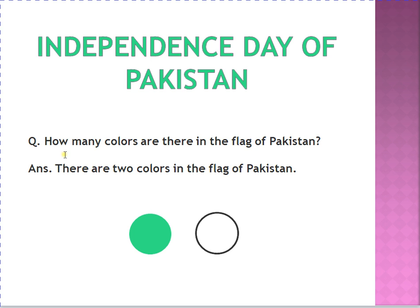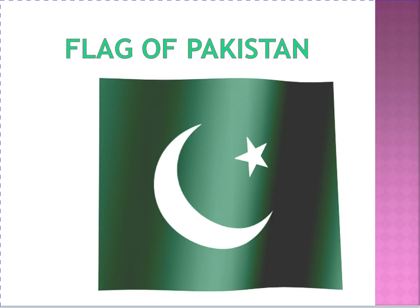Repeat after me. How many colours are there in the flag of Pakistan? The answer is there are two colours. Raise your two fingers in the air. Two colours in the flag of Pakistan. You can see it has two colours: white and green.